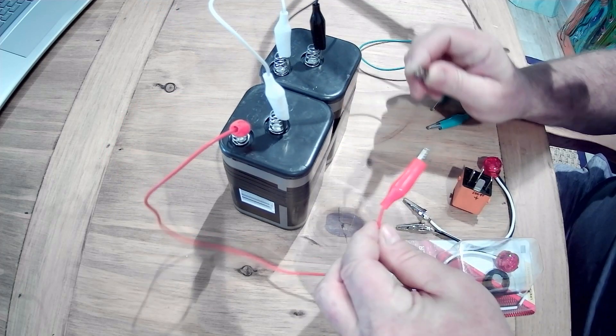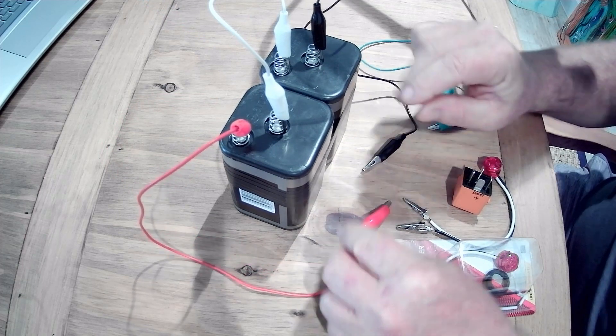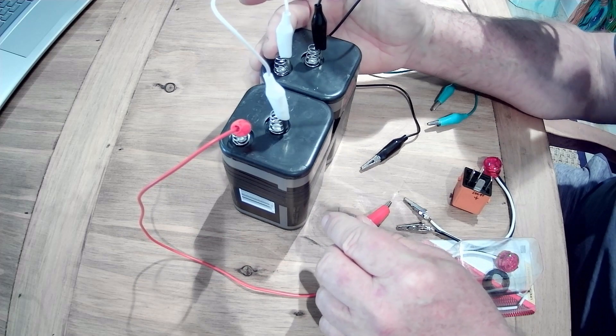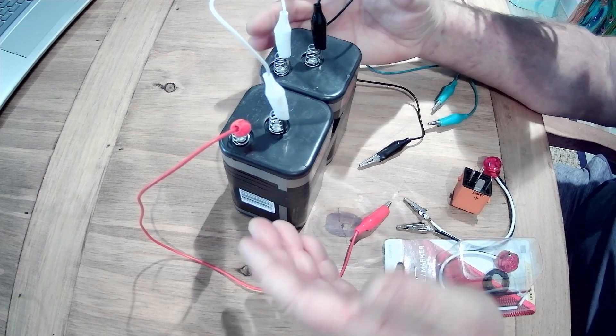You're going to need some test leads. In this case, we'll need four of them. We're going to need one to jump the battery, to put them in series, right? Because we've got six and six makes 12 volts. So positive, negative.